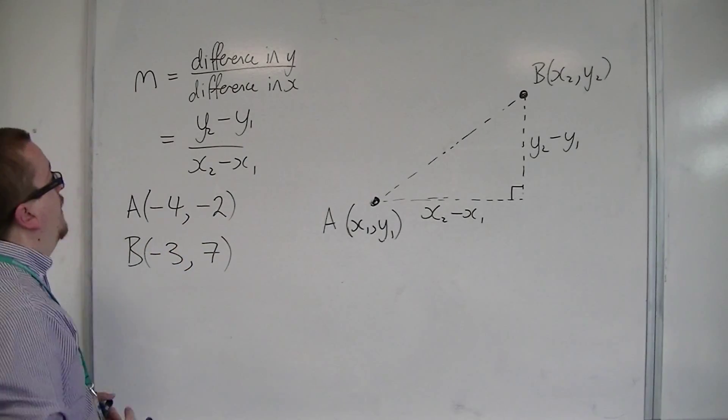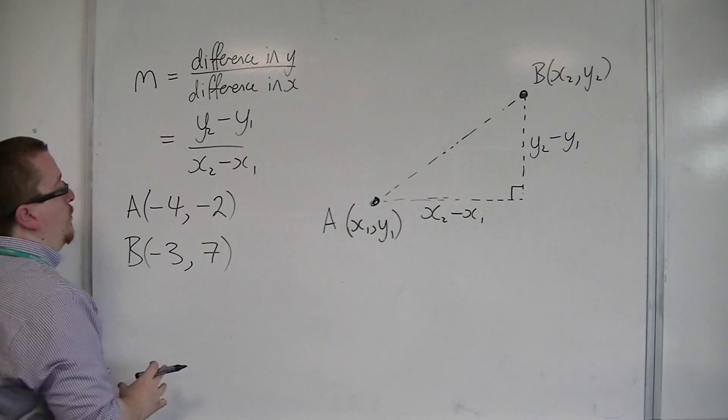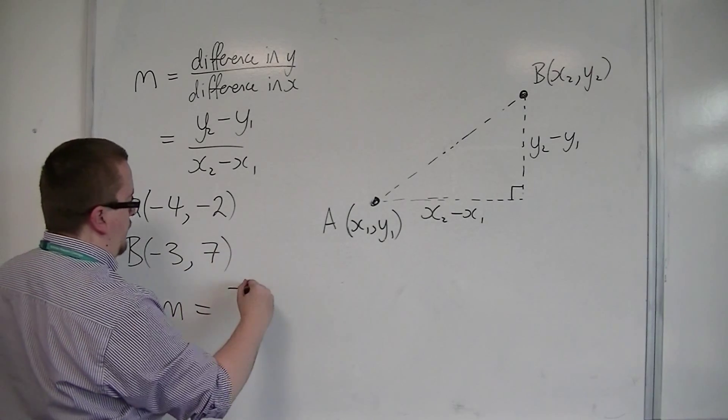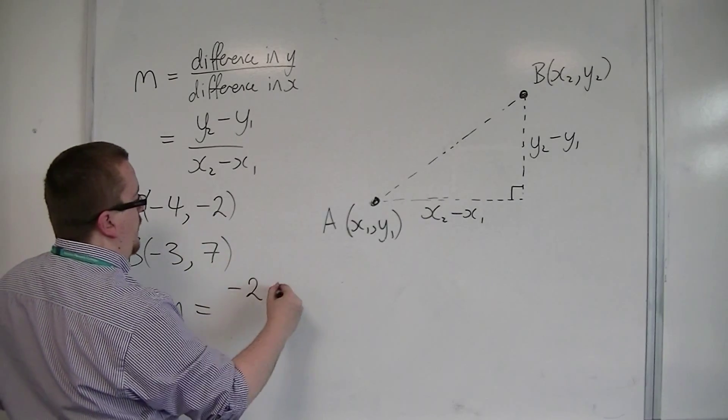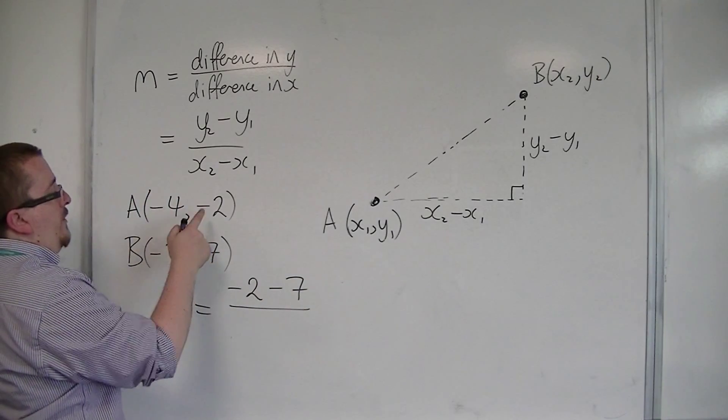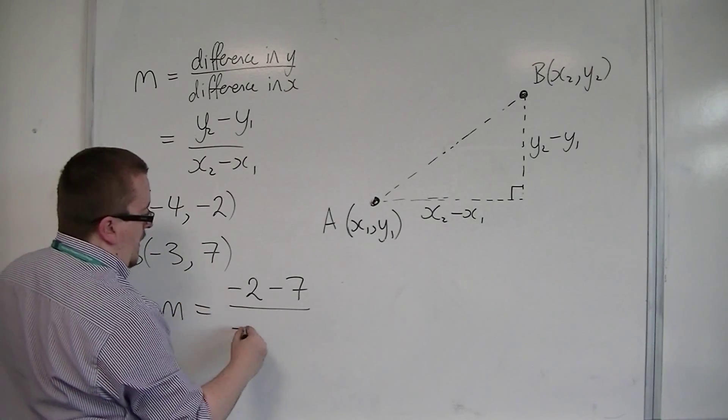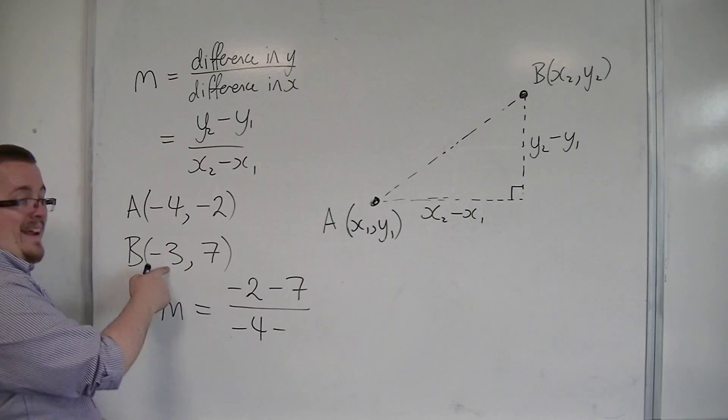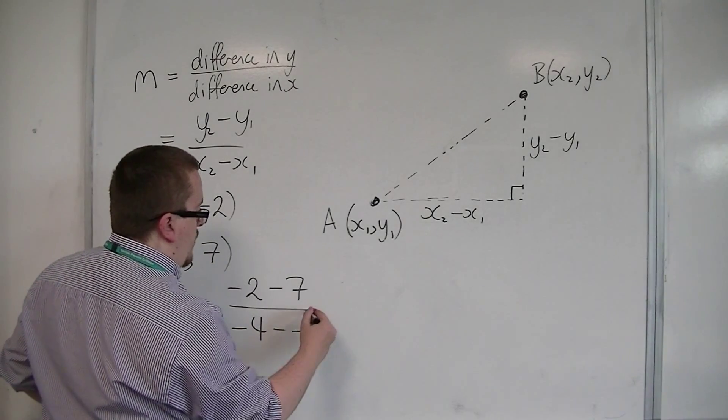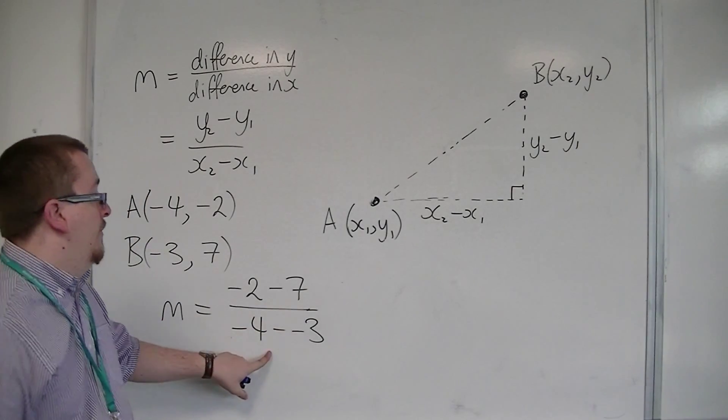What we want is the difference in the y-coordinates, and it doesn't matter which way round I work with them. So the gradient will be minus 2 take away 7. Let's say that that's y2 and that's y1. If that's x2 then, so that's minus 4, take away x1, which is minus 3. Very careful with your minus signs here, because you see we've got a lot of them.